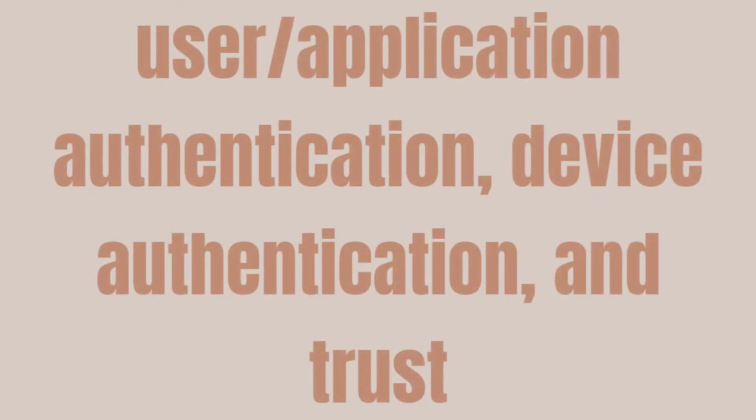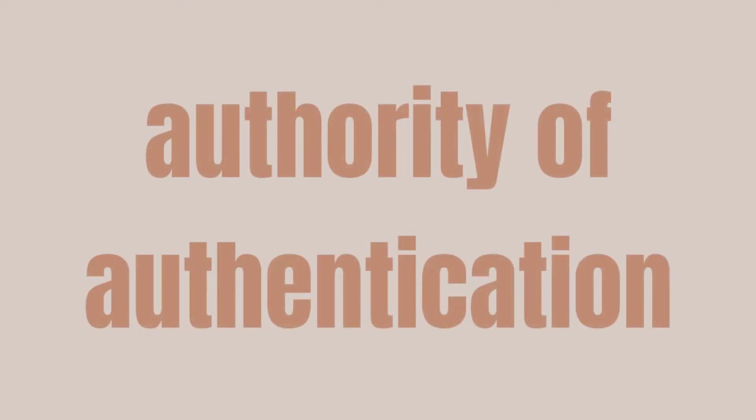There are three components in a zero trust network: user-application authentication, device authentication, and trust. The benefits of zero trust architecture include maximizing the authority of authentication, increased visibility into all user activities, and the ability to dynamically provide access based on current use case. It reduces the attacker's ability to move laterally within an organization, rooted in the principle of never trust — always verify.